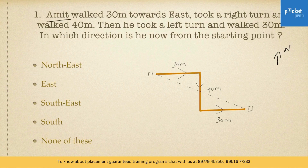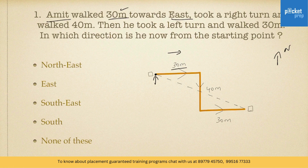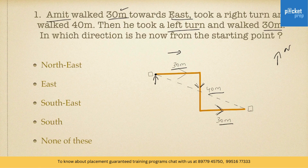In this question, Amit is towards the north direction and starts from this point. The first statement states that Amit walked 30 meters towards east. This is the east direction and he has walked 30 meters. Then he took a right turn — right turn from here goes in this direction — and walked 40 meters. Then he took a left turn and walked 30 meters again. If he is coming in this direction, his left will be here, so he has walked 30 meters again.